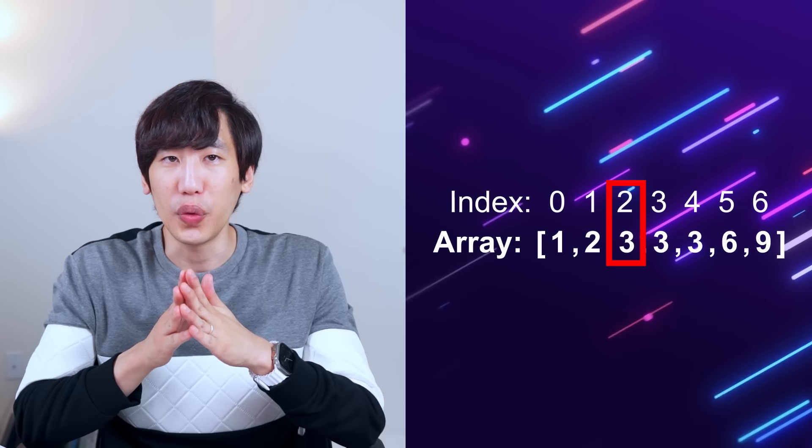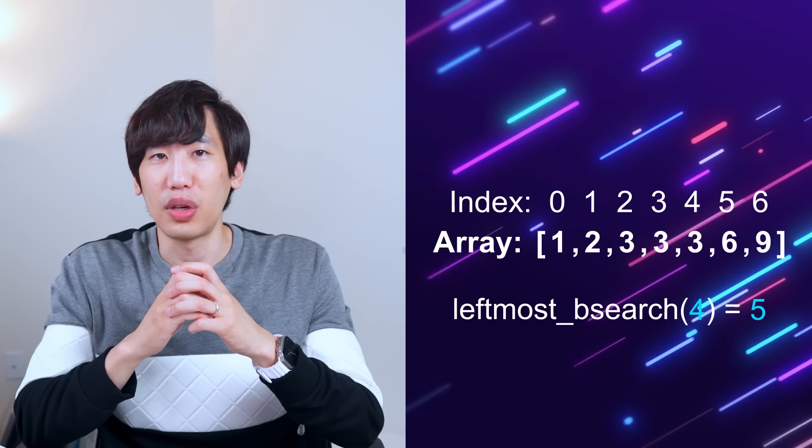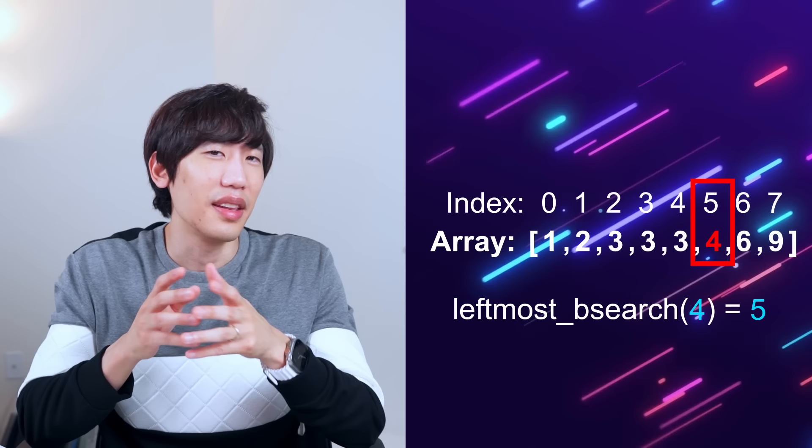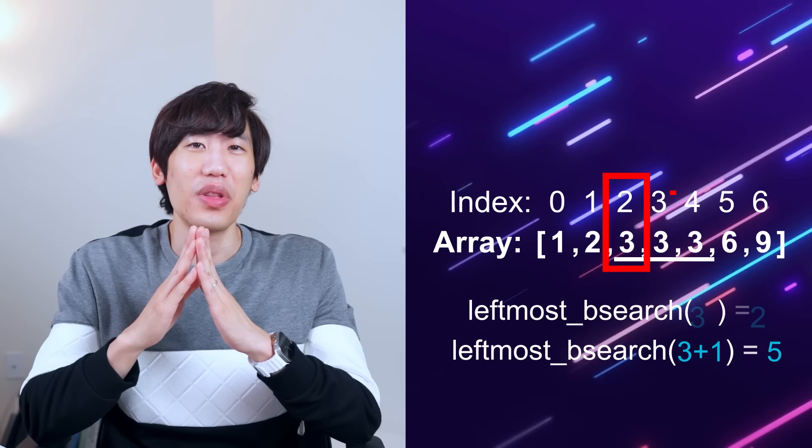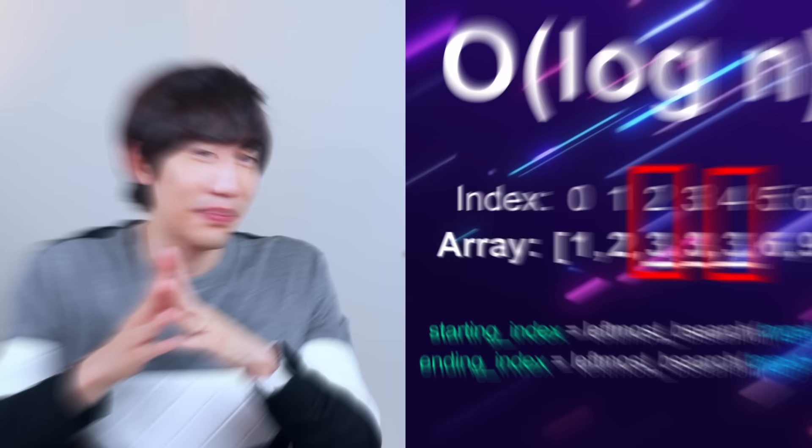For example, given a sorted array, a leftmost binary search of target 3 returns index 2 — the first occurrence. If the target doesn't exist, a leftmost binary search of target 4 returns index 5, a great location to insert it. Notice that the leftmost binary search of target 3 returns its starting index, while that of target plus one returns its ending index plus one. So within a sorted array, you can find an element's first and last position in logarithmic time.